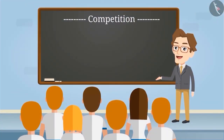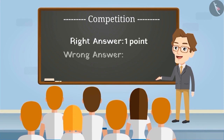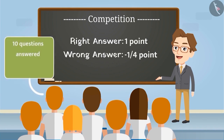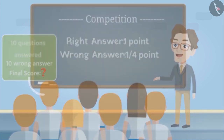In a competition, one point is given for a correct answer and minus 1 by 4 point is given for a wrong answer. Sameer answered 10 questions but all his answers were wrong. Can you tell me what Sameer's score is?